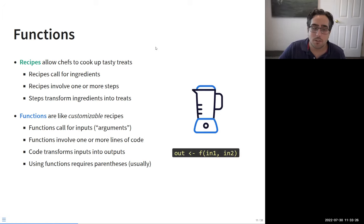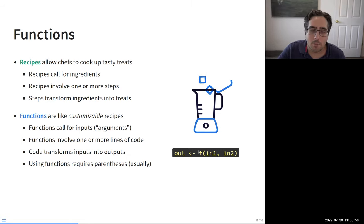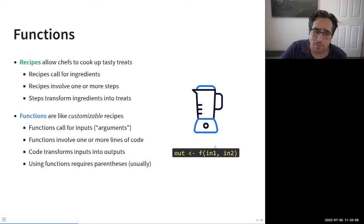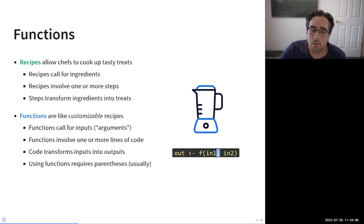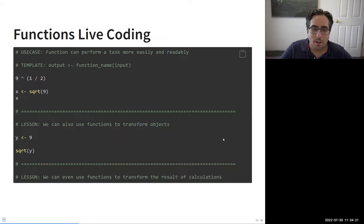That's the same template for what a function does in R: it has some inputs — we call those arguments — and then one or more lines of code that transform those inputs. Maybe you put a number in and it transforms that number, or you give it a bunch of numbers and it calculates their average. The way you use a function in R, the telltale sign, is parentheses. You assign output to an object, then call the function name, open parentheses, and give it arguments separated by commas.